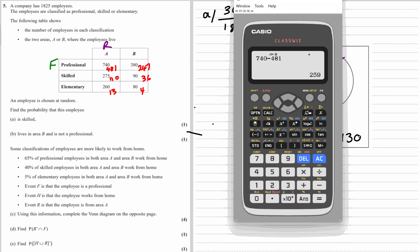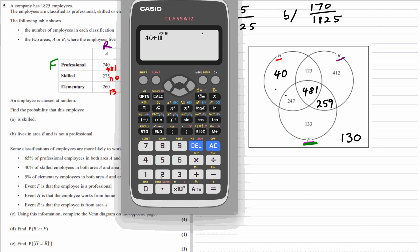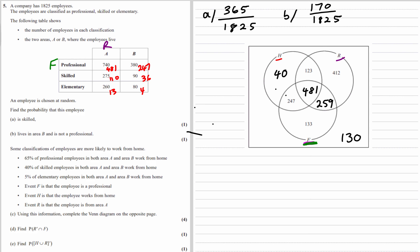And we can check on the calculator by adding these up and making sure they add up to the total number of employees. 481, 259, 123, 40, and 130. 1,825. So they add up to the right number.